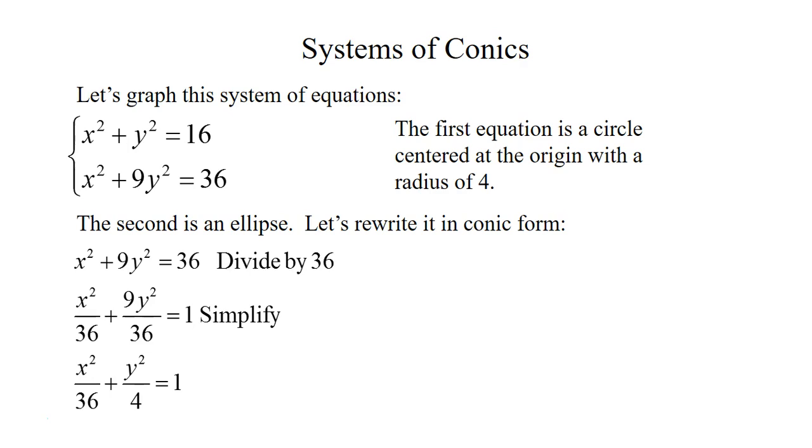So we get x² / 36 + 9y² / 36 = 1. Then all I did was simplify the fraction so 9 / 36 becomes 1/4. So we have x² / 36 + y² / 4 = 1.